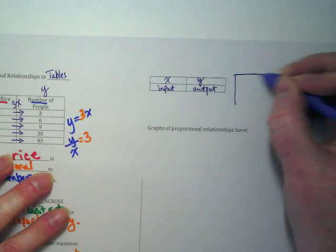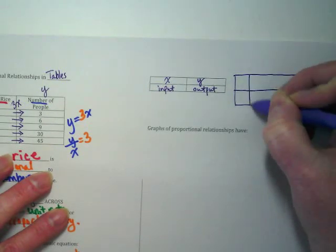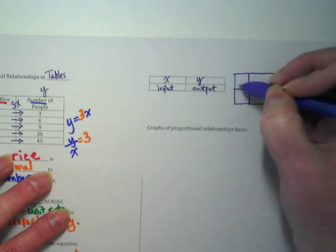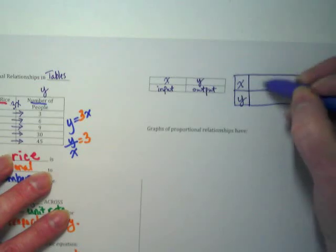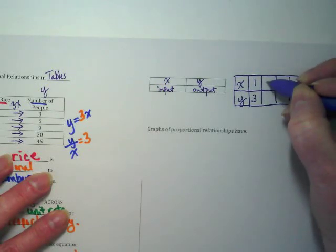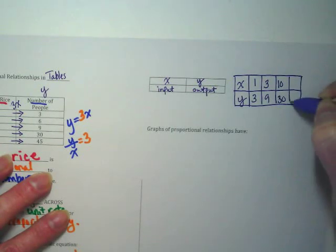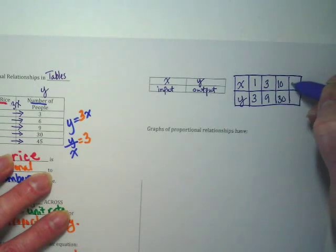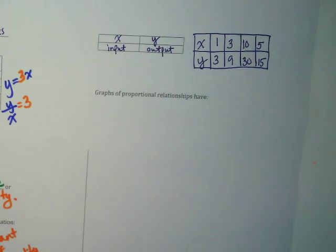But tables aren't always written this way, and if you think to what we've been doing with our stations the last few days, sometimes tables are written going left to right instead of up and down. True? And what did we find was on top, x or y? X, and then there is the y. Let's put in some numbers from our table on the left side of our page. I have 1 and 3, 3 and 9, 10 and 30. Let's give us another number that's not in the table. What if I said 5? What would our output be?